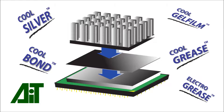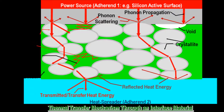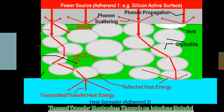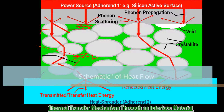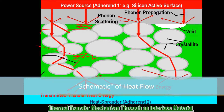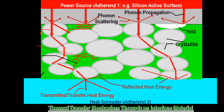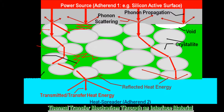For example, the thermal interface resistance between the die and the thermal interface material, bond line thickness, and bonding area dimensions. In physics, the transfer of heat is primarily phonon propagation and scattering when hitting at boundaries such as thermal interface materials.